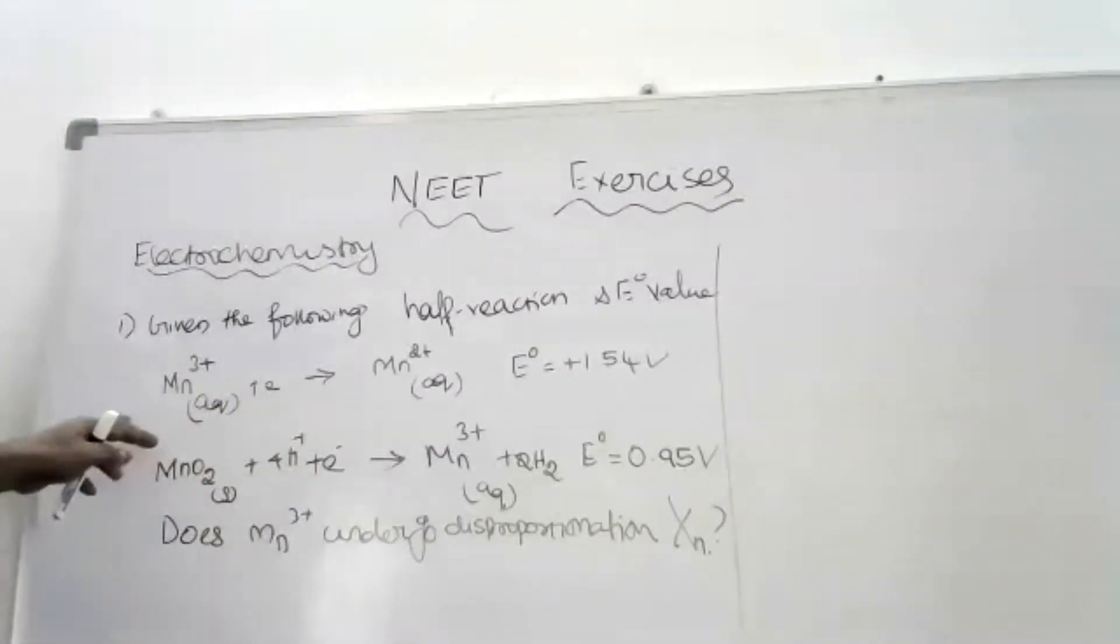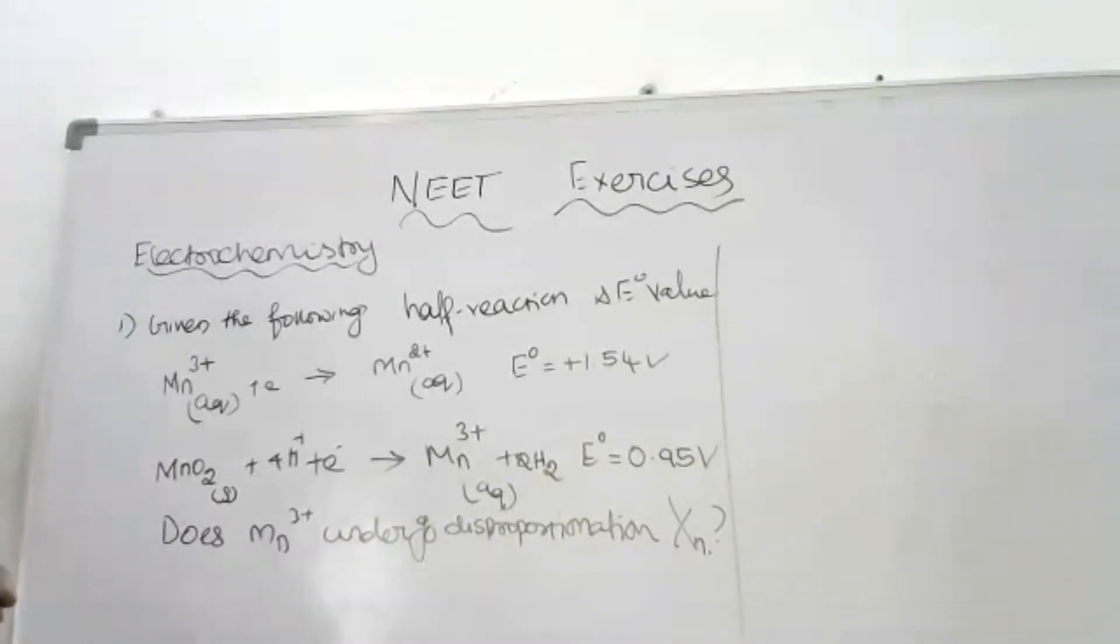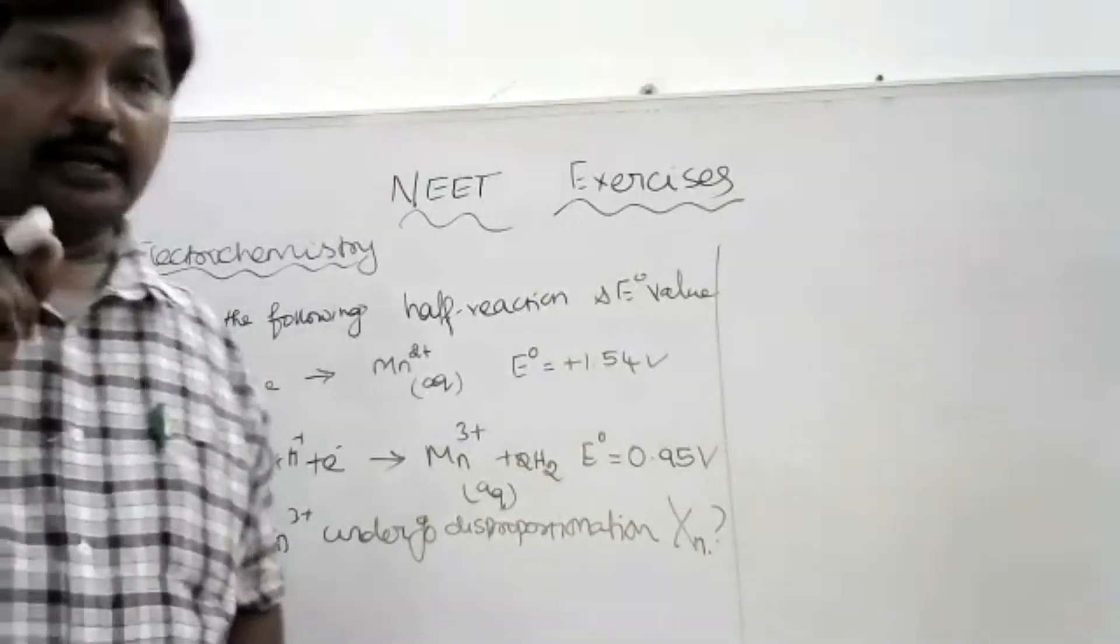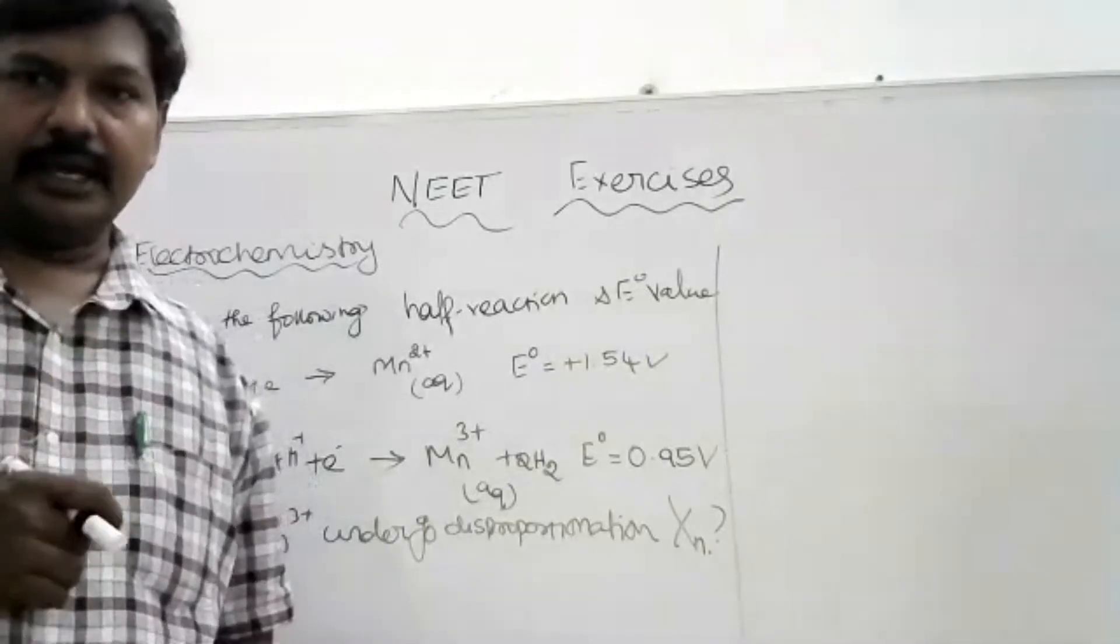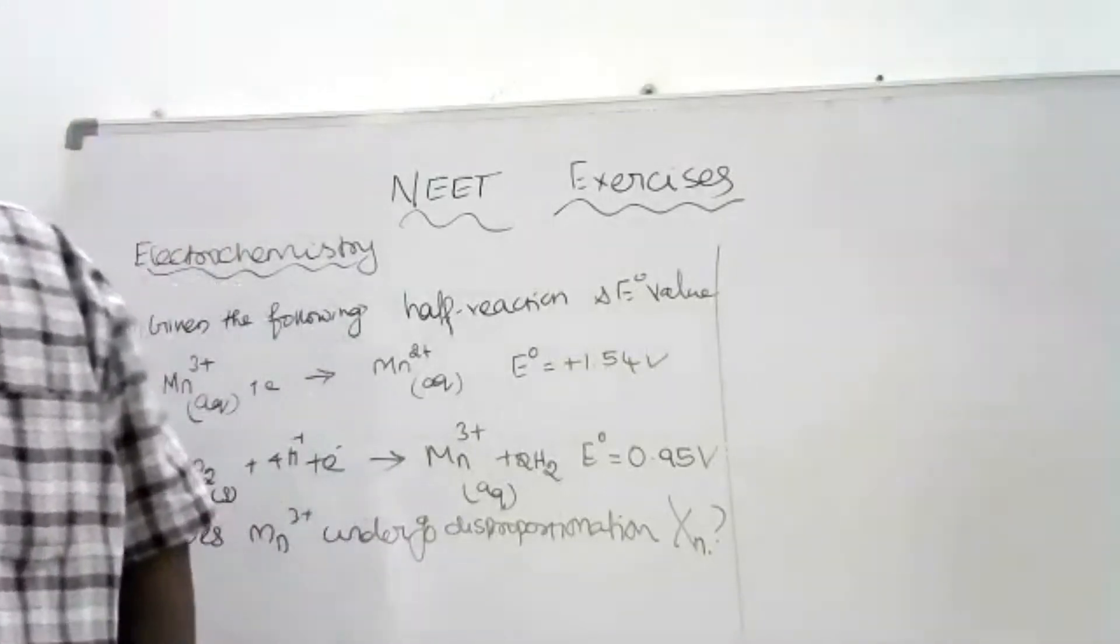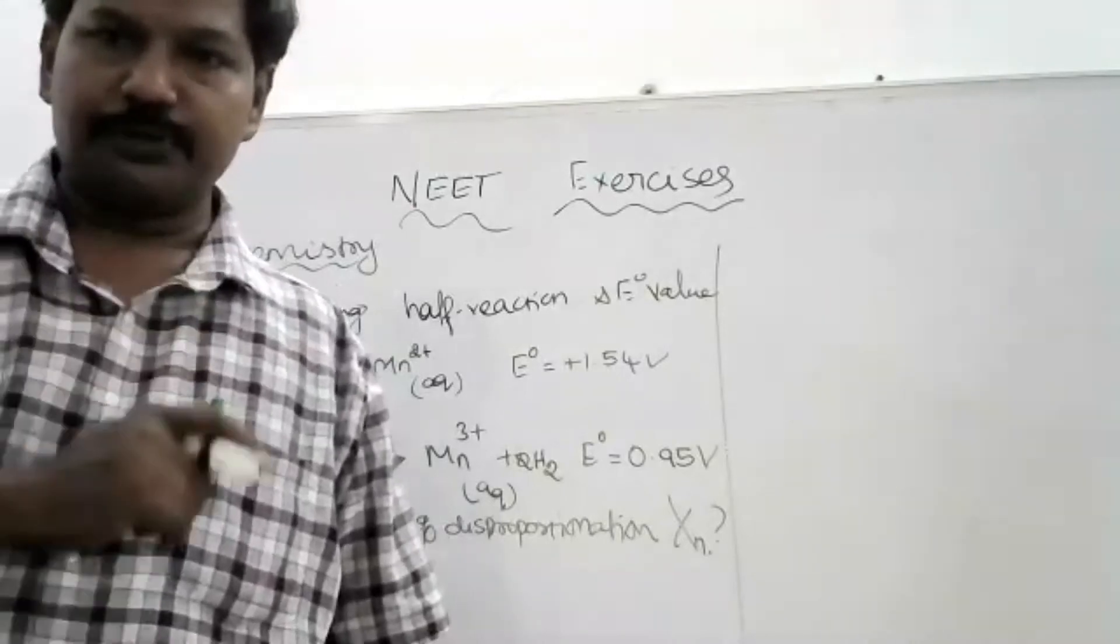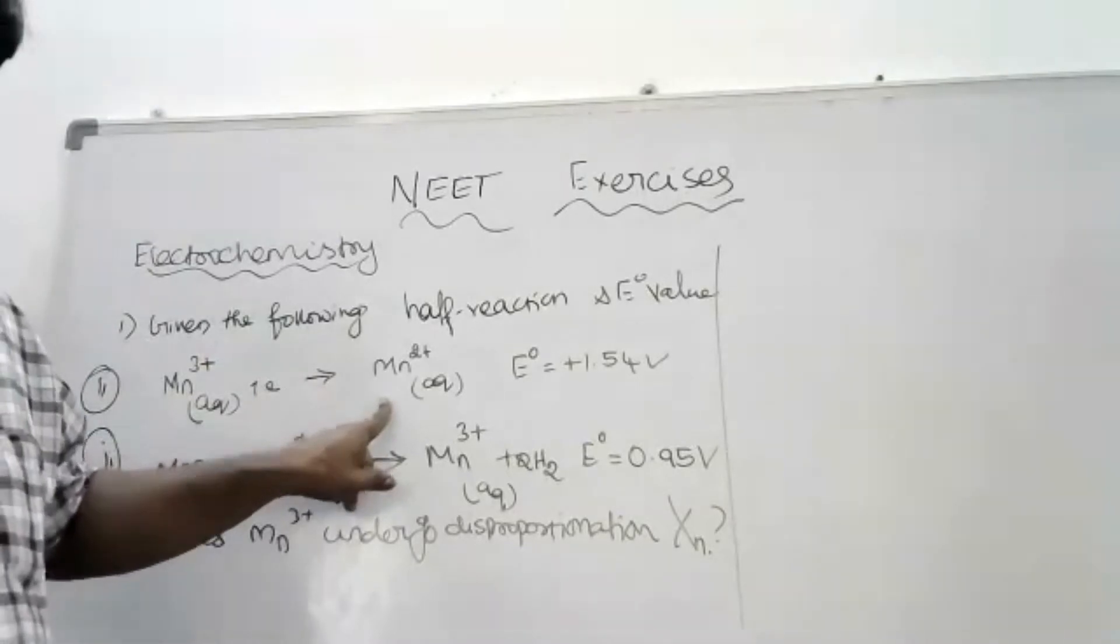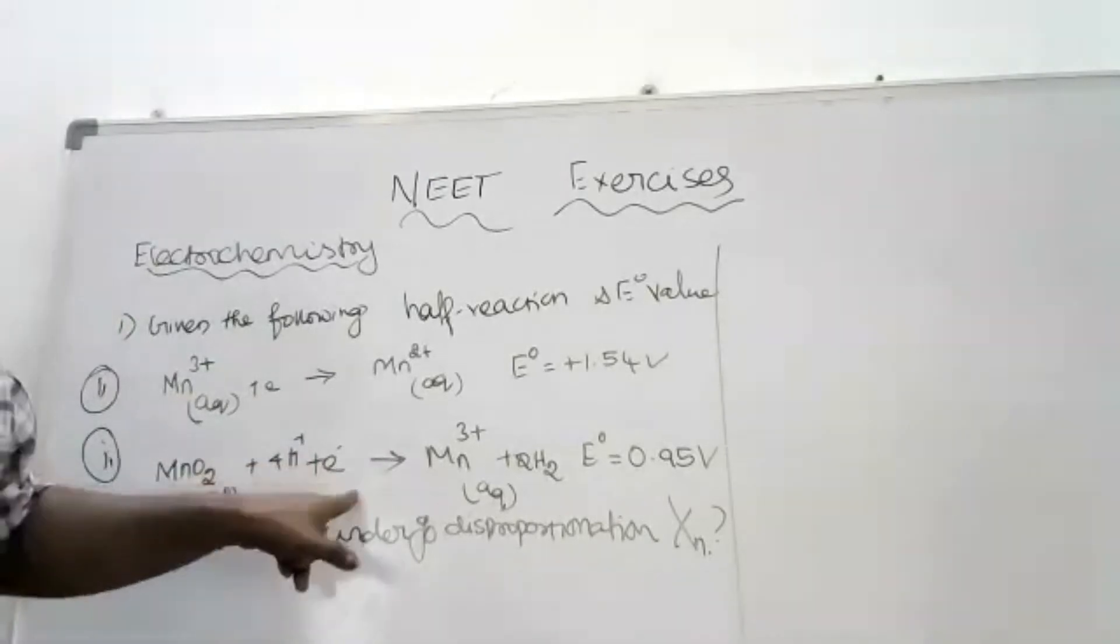So the E cell is more positive. Right now, an element will undergo this disproportionation reaction if E cell is positive. E cell is the total cell. Loss of electrons, so oxidation. Addition of electrons, so reduction.